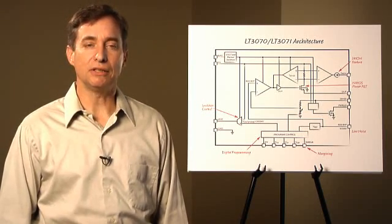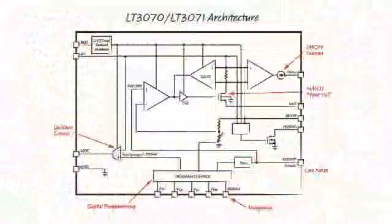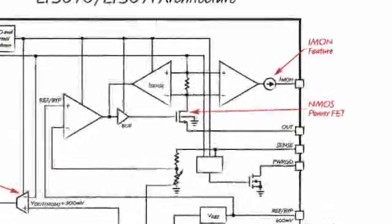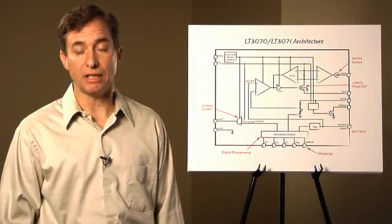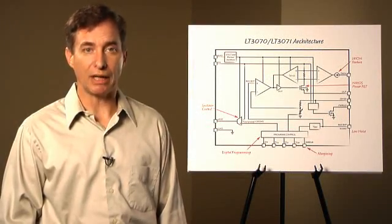Let's take a closer look at the LT3070 and 3071 architecture. This is a linear regulator with an NMOS power FET. The NMOS output inherently offers higher supply isolation and lower dropout, 85 millivolts typical at 5 amps, plus higher bandwidth for a faster transient response. At 1 MHz, the LT3070 has a lower output impedance than an array of bulk caps.